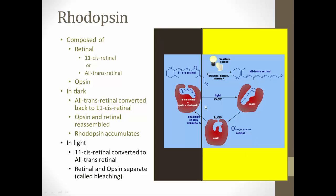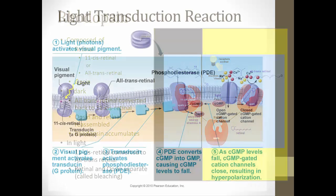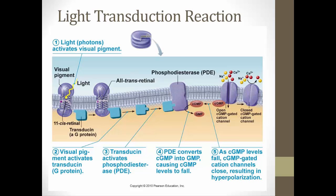When light hits rhodopsin, it converts 11-cis retinol to all-trans, which activates a G-protein called transducin. Transducin then activates phosphodiesterase, whose job is to convert cyclic GMP into GMP — breaking cyclic GMP down. The more light we have, the less cyclic GMP we have.